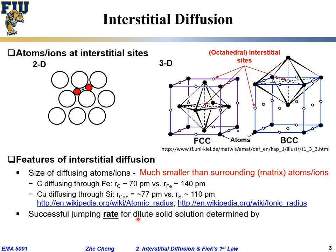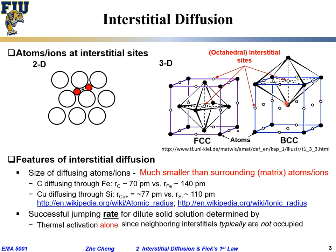For successful interstitial diffusion — an interstitial jump for a small solute atom — the rate is determined primarily by thermal activation, because it has to have the tendency to vibrate and jump. Does it need a neighboring empty interstitial site? Typically we are dealing with dilute systems: typical steel is fairly pure iron with a little carbon, and a typical silicon device is very pure silicon with very little copper. So in most cases, all neighboring interstitial sites are not occupied, meaning for interstitial diffusion it is primarily determined only by thermal activation.